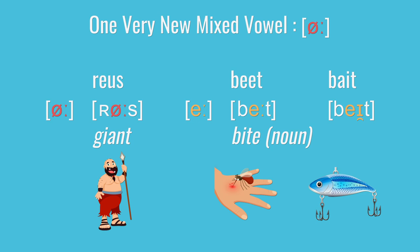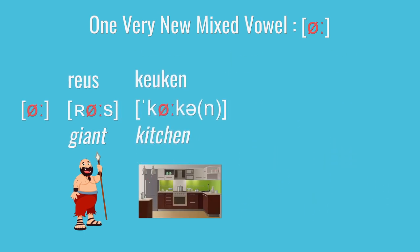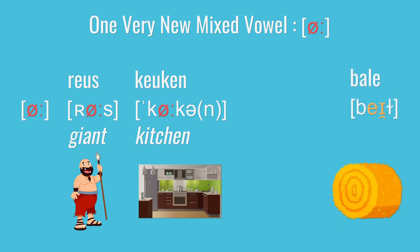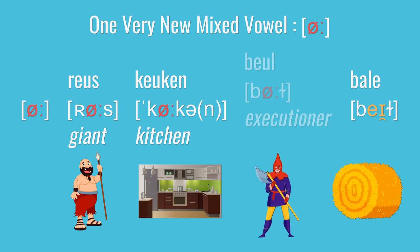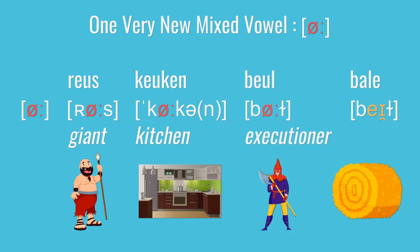And then the hard part: you're going to do that exact same tongue motion, but now you've got to round your lips. That gives you EI as in roos or keuken. So English has EI and Dutch has EI: EI, EI, beel, beul.